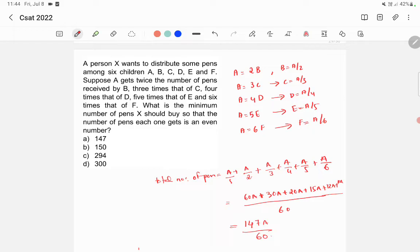So total number of pens, according to the equations that we have created, is 147A by 60. Now what you have to do is you need to equate this with all the options.